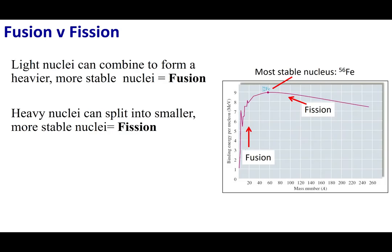Looking at the binding energy graph, it shows mass number versus binding energy per nucleus for all elements on the periodic table. There is one most stable nucleus, and that is iron-56 — the most stable nucleus in the entire universe. After iron-56, we still release a ton of energy from heavier nuclei, but not as much as iron-56 releases.